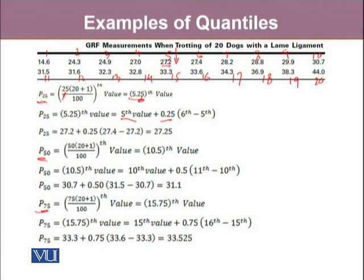This whole value is going to be above 5th value, and the difference of 6th value and 5th value. The 5th value is 27.2, 0.25 is a fraction, 27.4 is the 6th value, and 27.2 is the 5th value. If you solve this, the value turns out to be 27.2, hence this 27.2 is our 25th percentile.